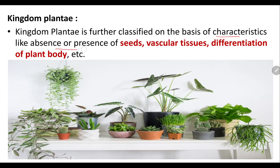Like presence or absence of seeds — there are plants which produce seeds and do not produce seeds. Vascular tissues — there are some plants which have xylem and phloem, and there are some plants which don't have these kinds of vascular tissues. There are plants whose body is not differentiated into roots, stem and leaves, but there are plants whose body is differentiated into roots, stem and leaves.